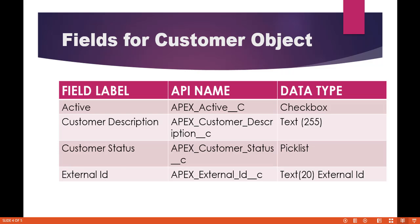Now, what are the fields of the Customer object? In the next tutorial, we are going to create these two custom objects — the Customer and the Invoice. These are the fields of the Customer object we are going to add: we are going to have a field called Active, which will tell us if this is an active or inactive customer. We are going to add a Customer Description field, which will give information about the customer — that is going to be a text field. Then we are going to create another field called Customer Status, which will tell you the status of the customer: active, inactive, pending, paid, etc. That's going to be a picklist and we will look at the picklist values.